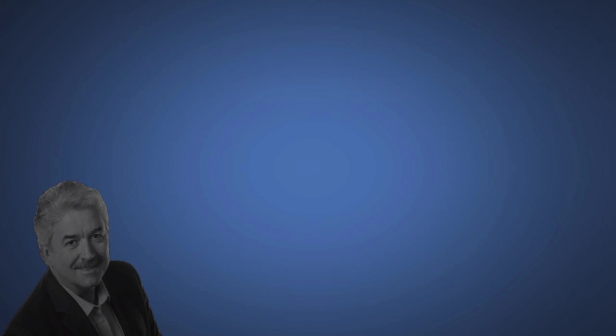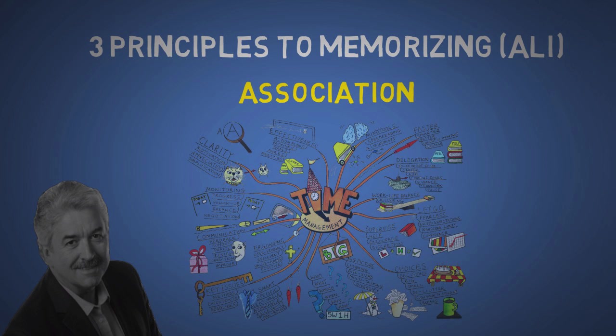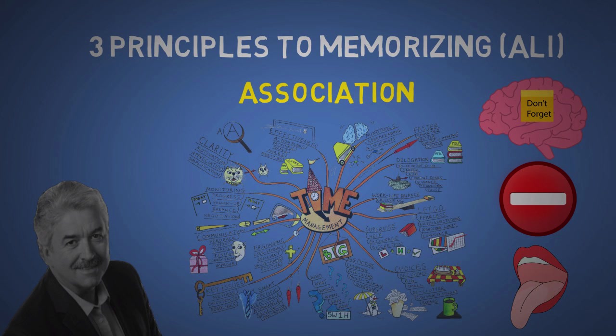First, we'll cover the eight-time world memory champion Dominic O'Brien's three principles to memorizing. A is for association. We tend to naturally link things together, kind of like a mind map. Now some say we never actually completely forget a memory, we simply just lose the path to access it. I'm sure we've all experienced the tip of the tongue phenomenon. We know the answer is somewhere in our brain, but we just can't access it.